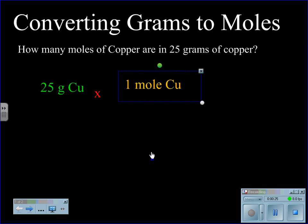One mole of copper is equal to the gram formula mass, or AMU, which can be found on the periodic table. One mole of copper is equal to 63.55 grams of copper.